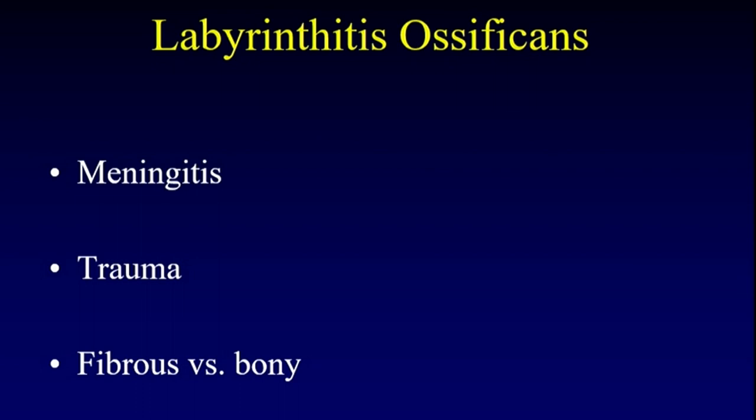There are two phases of labyrinthitis ossificans. There is a fibrous phase where fibroblasts infiltrate the labyrinth and displace all of the normal fluid. And then there is a bony phase where bone infiltrates and replaces those fibroblasts and the whole thing whites out on CT. We can distinguish the acute, the fibrous, and the bony phases of labyrinthitis ossificans on imaging.